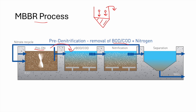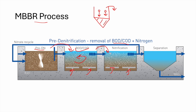The small dots represent the MBBR media moving within this reactor — this is the pre-denitrification stage. Then the wastewater goes through aerobic conditions by diffusing air through diffusers, creating aerobic conditions and media motion. Through this stage, BOD and COD are highly reduced, followed by the nitrification stage also under aerobic conditions.